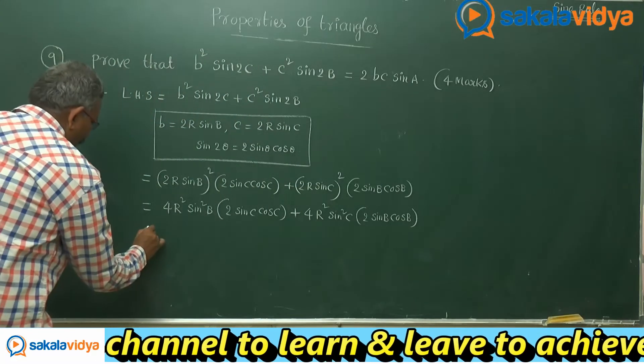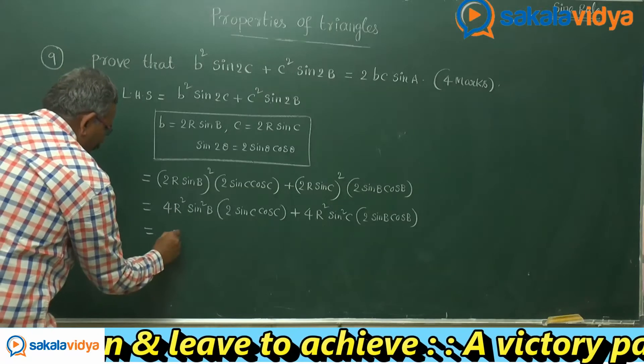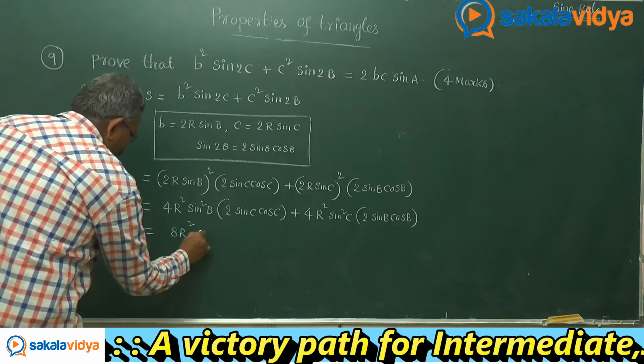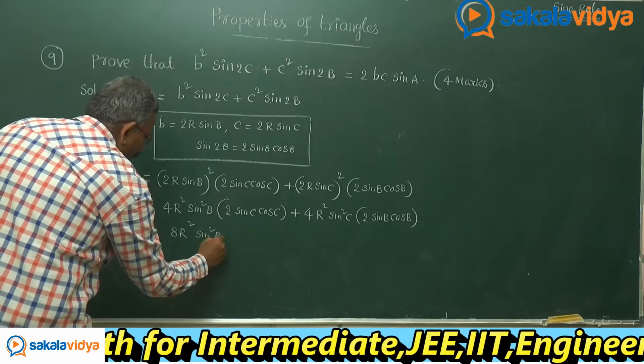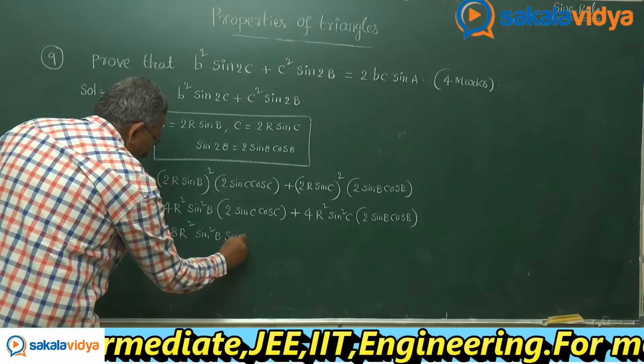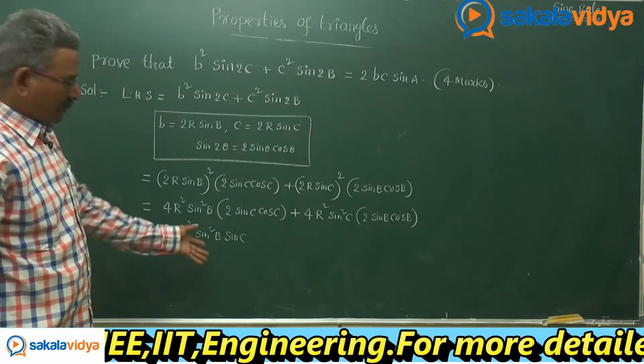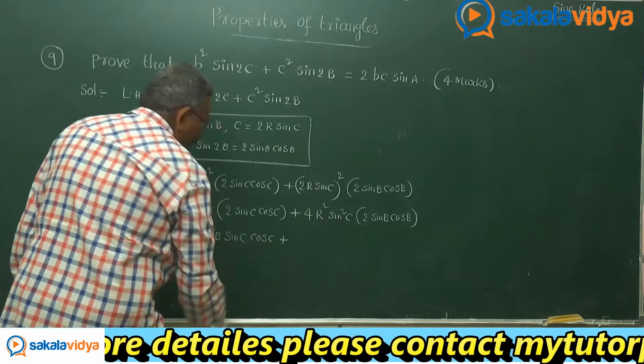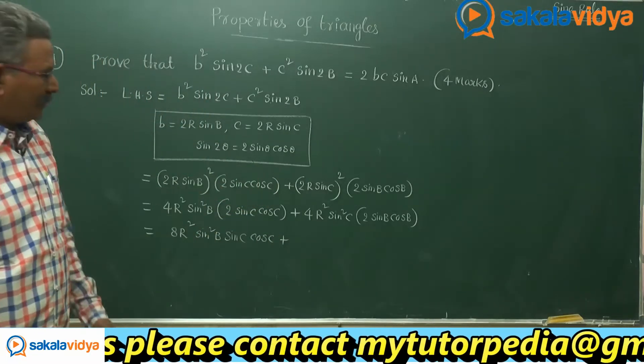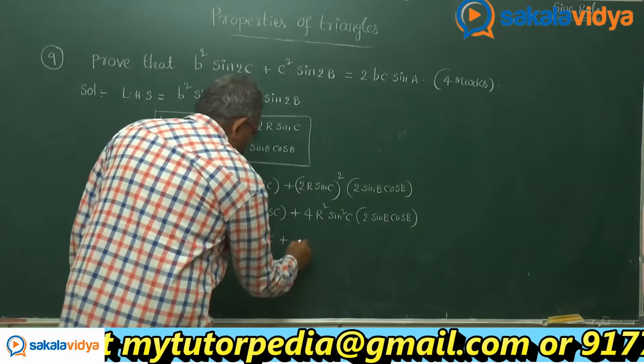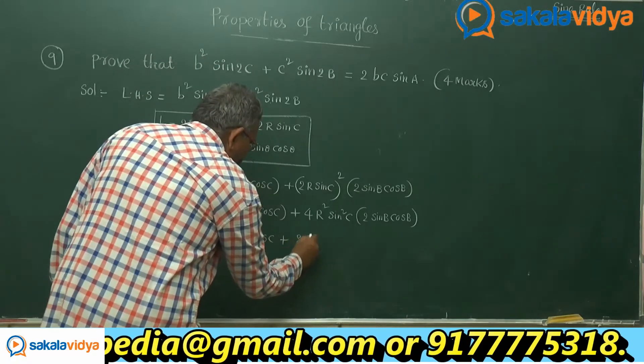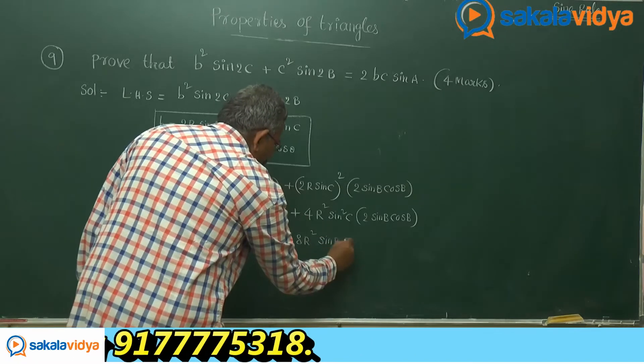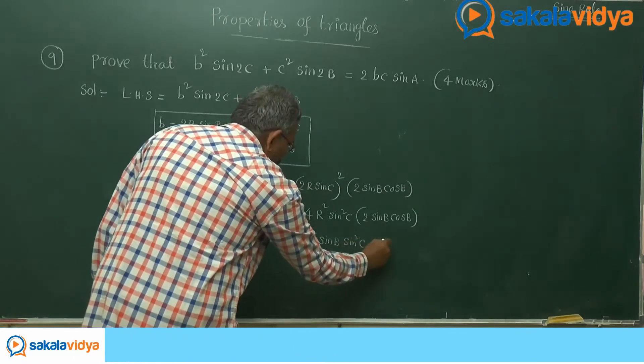This we can write as 8r squared sin squared b sin c multiplied by cos c, plus here also, what do you get? Let us just inspect it. 8r squared sin b sin squared c cos b.